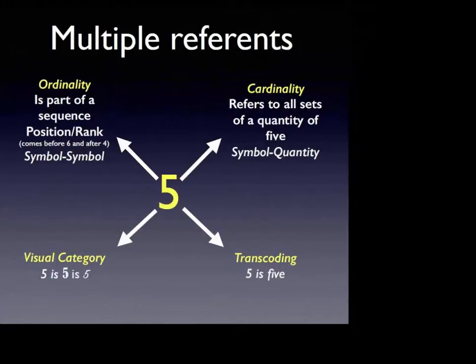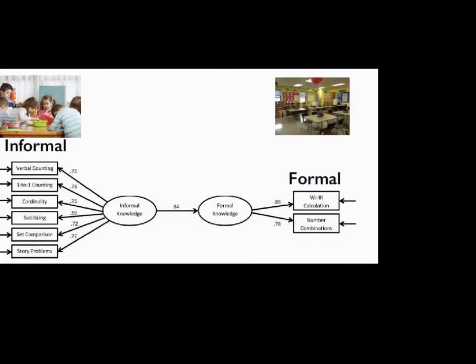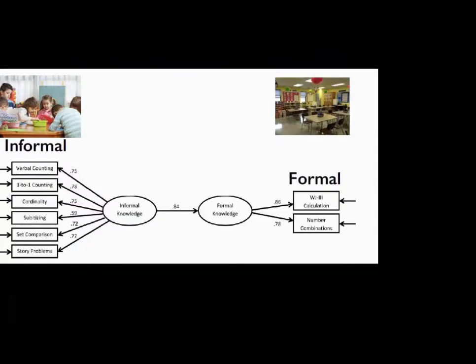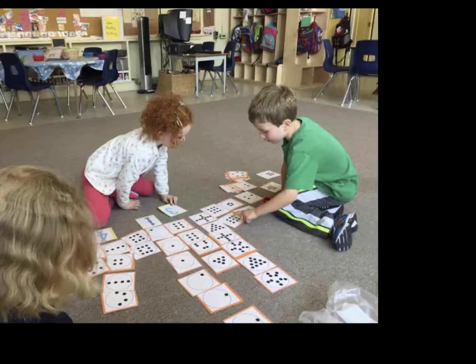Cardinality refers to all sets of the quantity of five. Visual category would be that five is five is five. Transcoding is five is five, when it's written out versus just the numeral. And so there's all these different things that are working on math and whether it's easy or hard for you. So having that really good sense of numbers makes a difference.